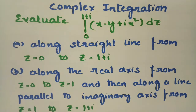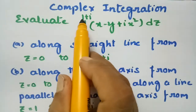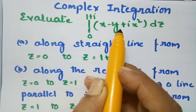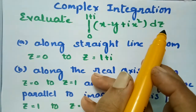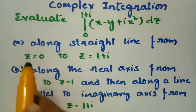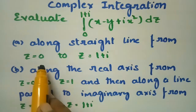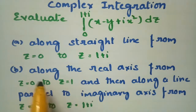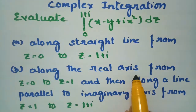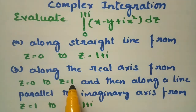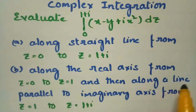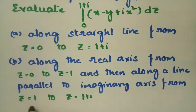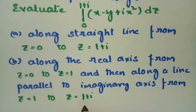Today's problem is from complex integration. We evaluate the integral from 0 to 1+i of (x - y + i·x²) dz, along two paths: first, along the straight line from z=0 to z=1+i; second, along the real axis from z=0 to z=1, and then along the line parallel to the imaginary axis from z=1 to z=1+i.